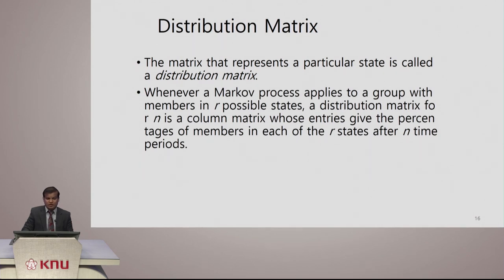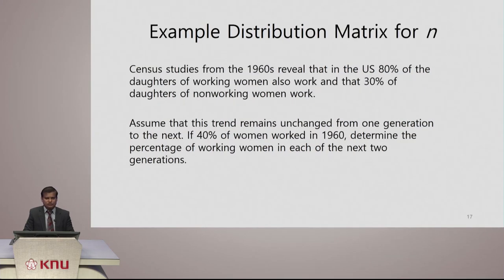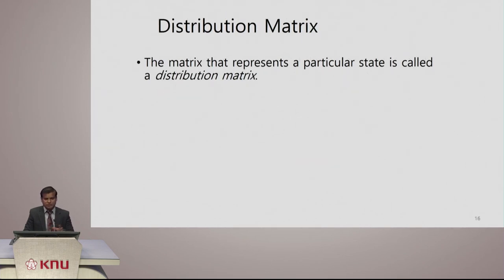Whenever a Markov process applies with r possible states, we use a distribution matrix for n — a column matrix where entries give the percentage of members in each of the states for n periods of time. We are going to look at another concrete example to understand how to build the transition matrix and how it distributes into this distribution matrix.